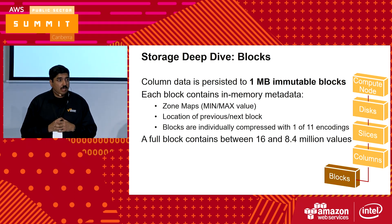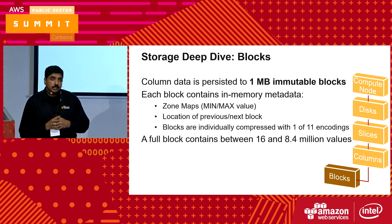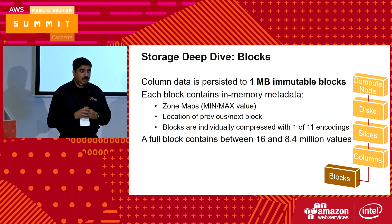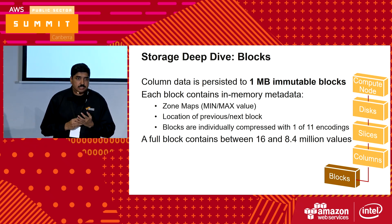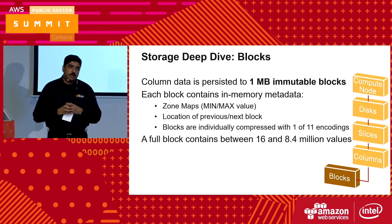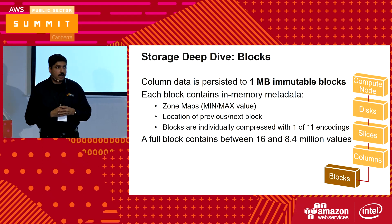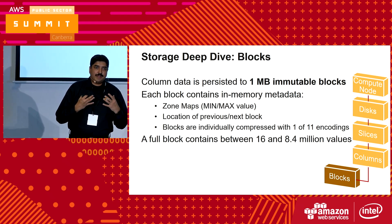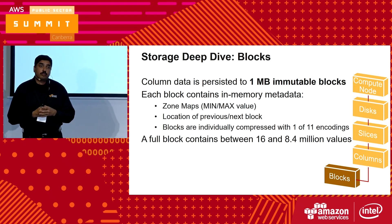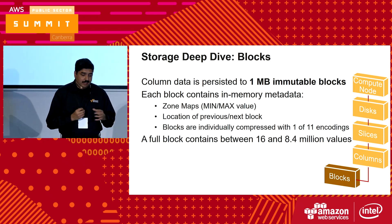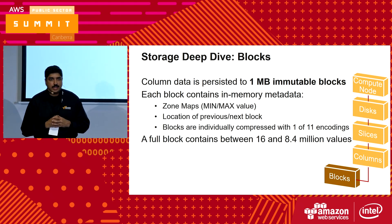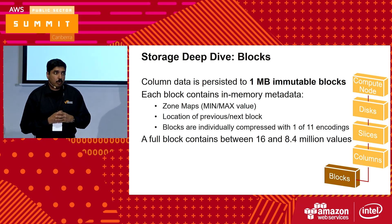Blocks are immutable 1MB blocks used in Redshift — all data is stored on the block. The block has metadata including zone map information and MVCC data. Your immutable blocks are always reformatted when you do an update; we don't change a record inside a block — a new block is picked up instead. You need to be careful about many updates on Redshift because you'll need a vacuum or deep copy, as updates create ghost rows inside the blocks. A full block may contain anywhere between 16 and 8.4 million values.